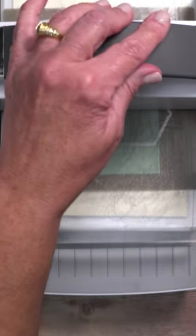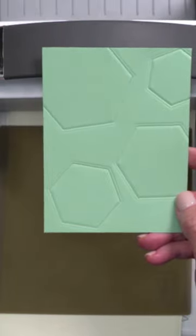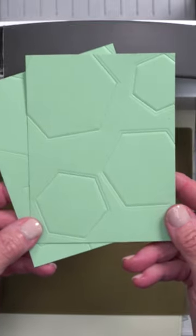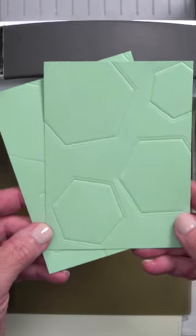It should go through fairly easily, otherwise you have too much of a sandwich created with your shims. Now you can go back through the machine numerous times to fill in those blank areas, but it's lots of fun and it's a great way for you to create custom backgrounds that are embossed for your card making and scrapbooking pages.